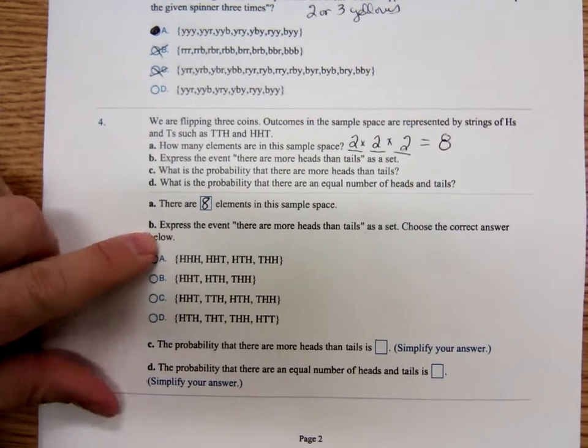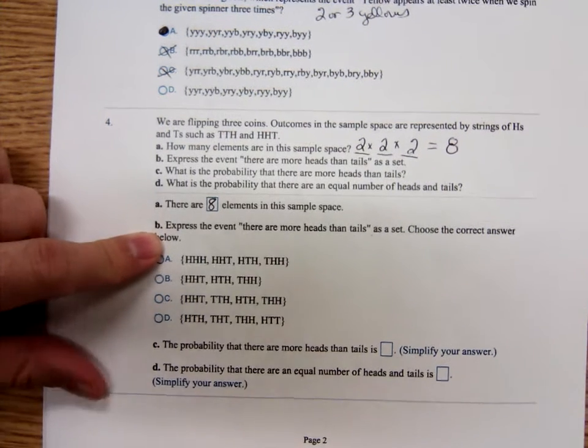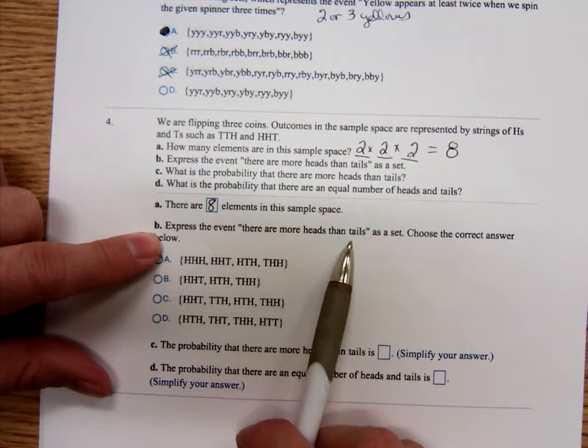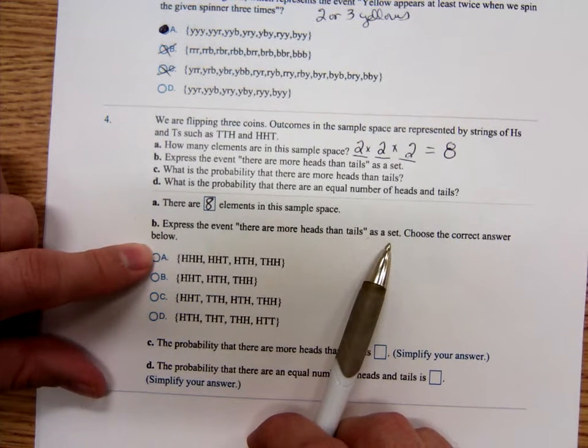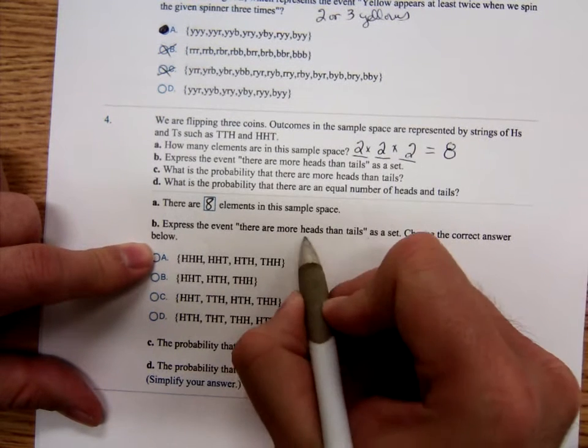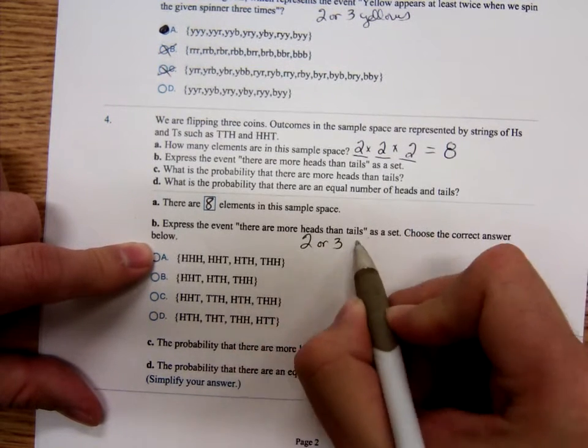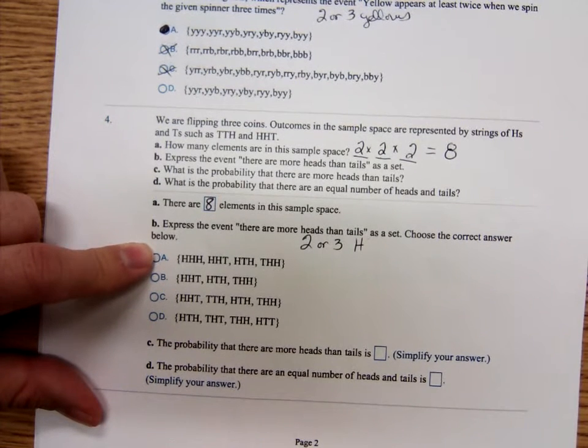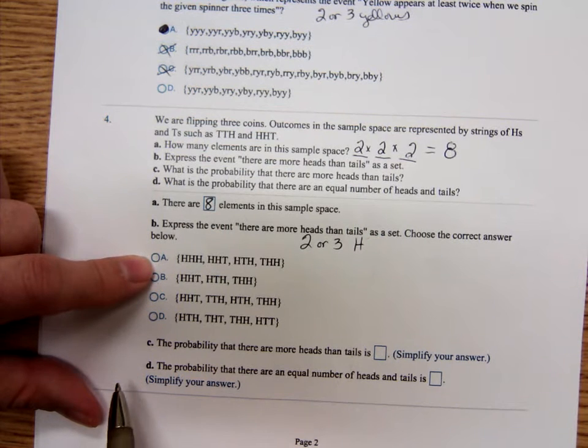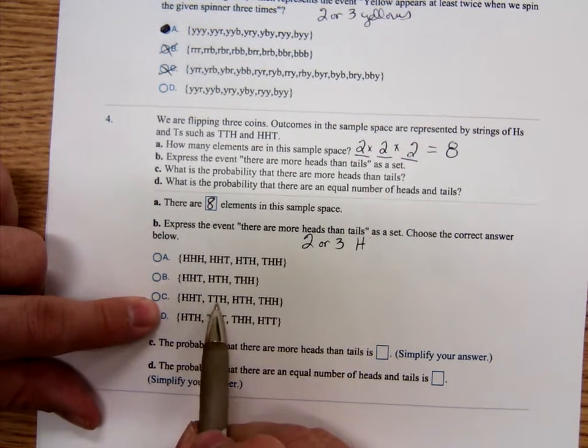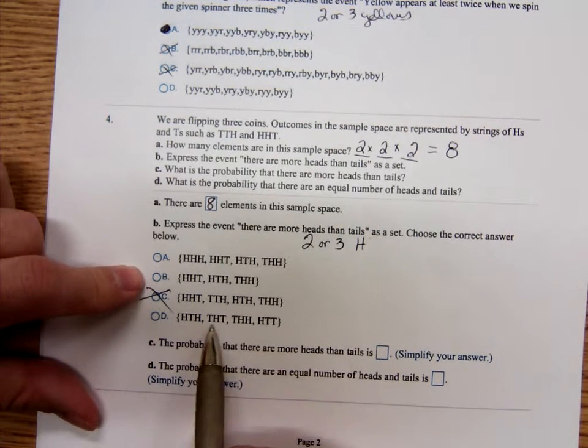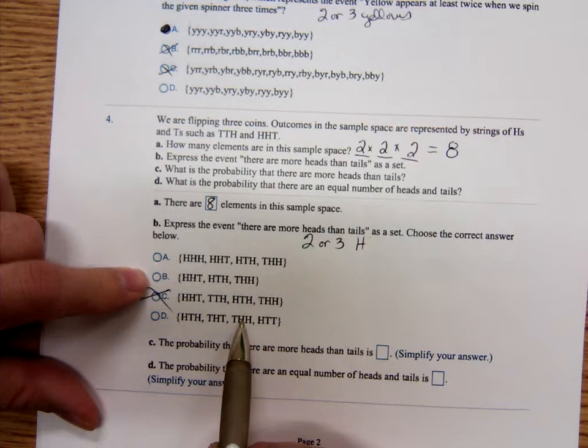On B, express the event there are more heads than tails. More heads than tails. That would mean that you have either two or three heads. Which one has it two or three heads? It's certainly not C. You see, tail, tail. Same thing happens here on D.